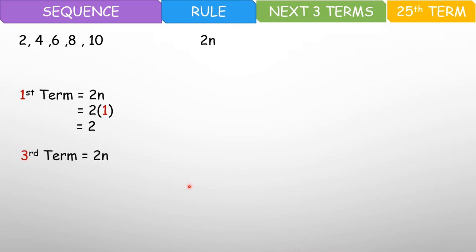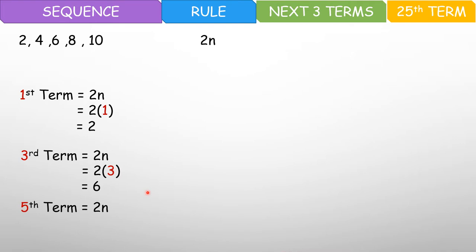Now, tignan natin yung third term. Diretso tayo sa third term. Substitute natin yung 3. So that would be 2 times 3, and that is 6. So third term natin — 1, 2, 3 — ayan nga yung third term natin, which is 6. So tama nga yung rule. Now, diretso tayo sa fifth term. Fifth term, that would be 2n again. 2 times 5, and 2 times 5 is equal to 10. Yung fifth term natin ay 10. So tama yung rule.